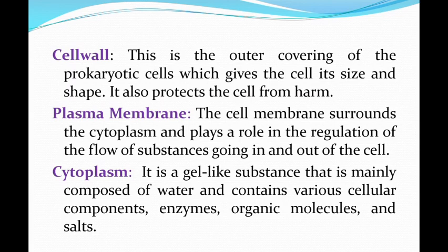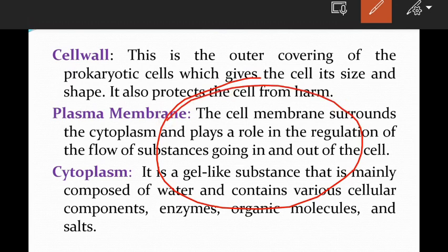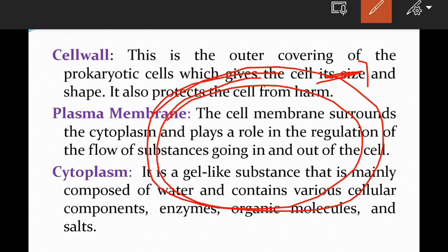And then the cell wall — this is the outer covering of the prokaryotic cell which gives the cell its size and shape. It also protects the cell from harm. The cell wall provides shape, size, and protection.